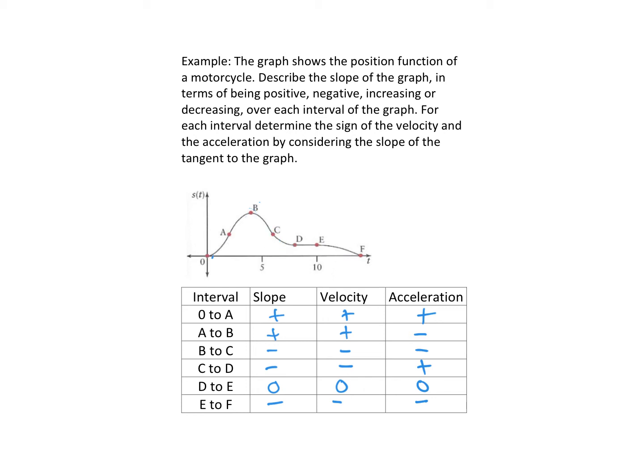Now we want to look at whether the motorcycle is speeding up or slowing down. When the signs are the same, the motorcycle is speeding up. So here velocity is positive and acceleration is positive — it is speeding up in this interval. Here velocity is positive and acceleration is negative — it is slowing down.